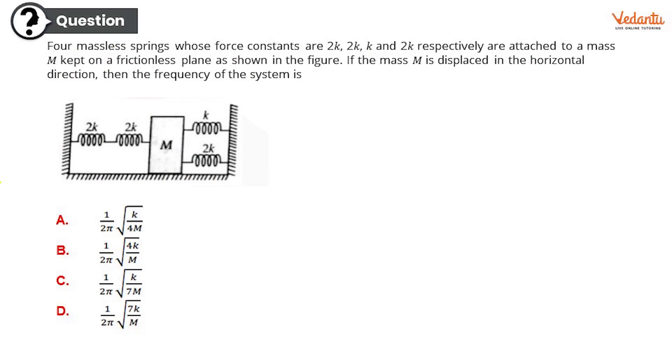Moving on to question number seven: four massless springs whose force constants are 2K, 2K, K, and 2K respectively are attached to a mass m kept on a frictionless plane as shown in the figure. If the mass m is displaced in the horizontal direction, then the frequency of the system is: Option A: (1/2π)√(K/4m). Option B: (1/2π)√(4K/m). Option C: (1/2π)√(K/7m). Option D: (1/2π)√(7K/m). A fairly difficult question, so try to give me the answer, but if you apply the formula I think you will be definitely getting this right.